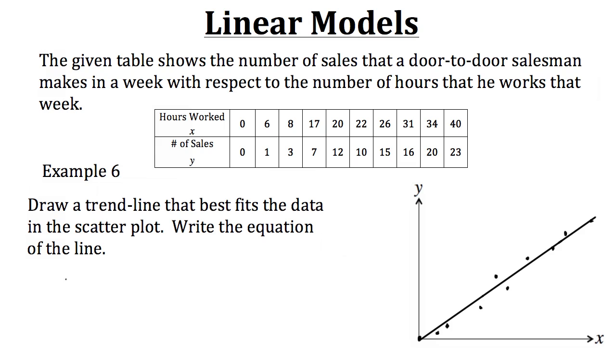So let's use those two points in order to make an equation for our trend line. So to start off, we'll want to find our slope, which will be our y2, which is 23, minus our y1, which is 0, divided by our x2, which is 40, minus our x1, which is 0. So when we simplify this, we get 23 minus 0, which is 23, divided by 40 minus 0, which is 40.